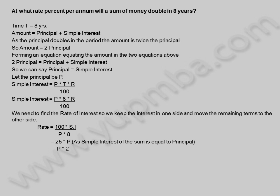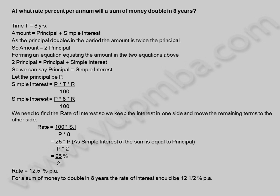This equals 25 into principle divided by principle into 2, since simple interest equals principle. Rate is equal to 25 by 2, which is 12.5 percent per annum. For a sum of money to double in 8 years, the rate of interest should be 12 and 1/2 percent per annum.